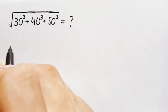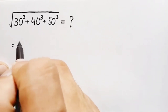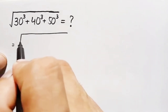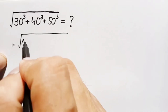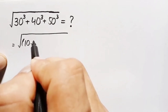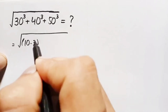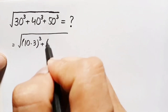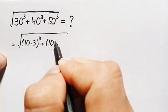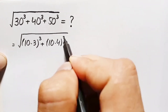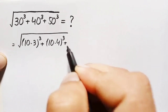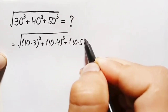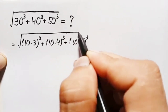In the first method, we can write 30 as 10 times 3, so 30 cubed becomes (10×3) cubed. Similarly, 40 can be written as 10 times 4, so 40 cubed is (10×4) cubed, and 50 can be written as 10 times 5, so 50 cubed is (10×5) cubed.